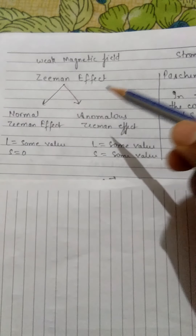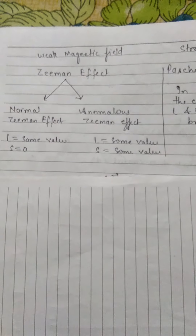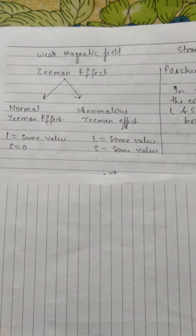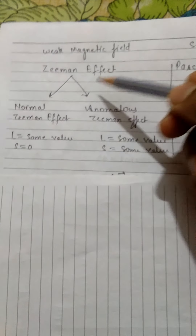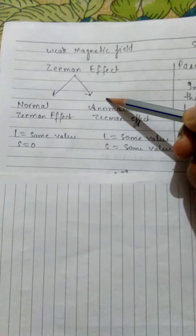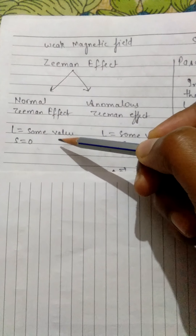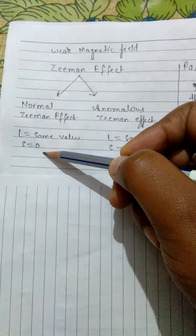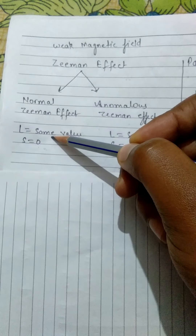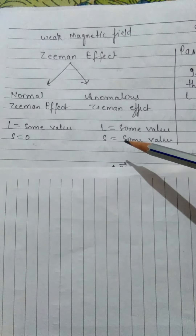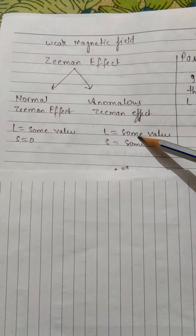Earlier we discussed the Zeeman effect in our classroom. We found that the Zeeman effect describes the splitting of spectral lines in the presence of an external magnetic field. The Zeeman effect is characterized in two parts: one is the normal Zeeman effect and the second is the anomalous Zeeman effect. In the normal Zeeman effect, the spinning of the electron does not exist because s is equal to zero, so there is only orbital motion of the electron. But in the case of the anomalous Zeeman effect, the spinning of the electron exists as well as the orbital motion of the electron.